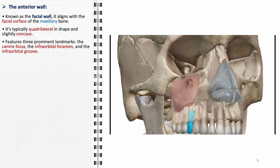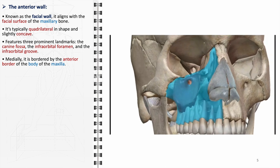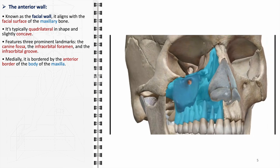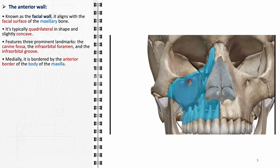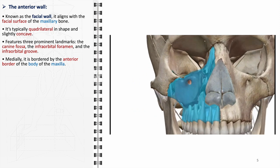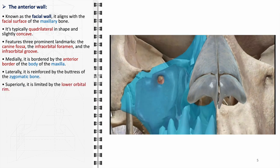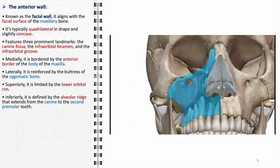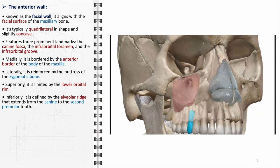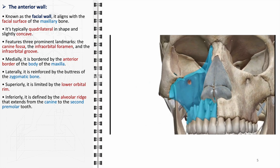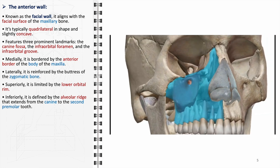The canine fossa, a depression in the bone, is a crucial landmark in maxillofacial surgery. The infraorbital foramen and groove are significant as they house the infraorbital nerve and artery, critical for sensation and blood supply to the mid-face. The anterior wall is medially bordered by the anterior border of the body of the maxilla, laterally supported by the buttress of the zygomatic bone, superiorly limited by the lower orbital rim, and inferiorly defined by the alveolar ridge extending from the canine to the second premolar tooth. This relationship is particularly important in dentistry, as dental procedures in this area can impact the sinus.